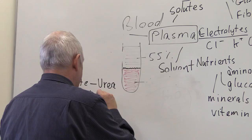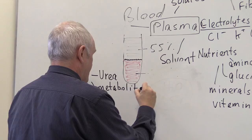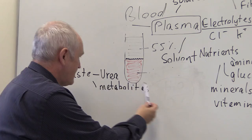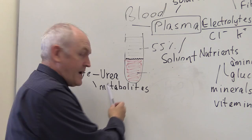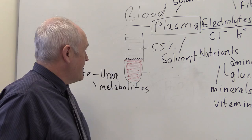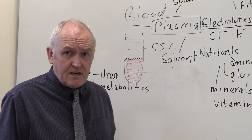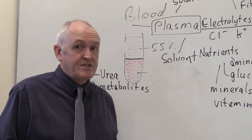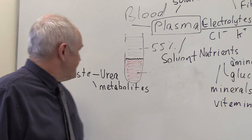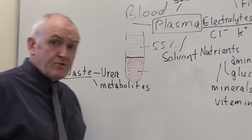The liver also breaks down toxins into metabolites — breakdown products of larger molecules — making them more soluble so they can be readily excreted in the urine. The only way waste products get from the liver or the cells to the kidneys is by being transported by the blood in the plasma. The plasma also contains the endocrine hormones.